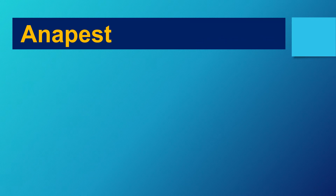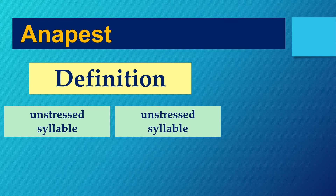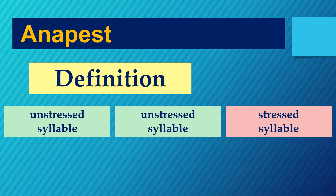Now let's look for some anapests. Anapests are not very common in the English language, so whenever you see one it's a reason to get very excited. Here's what an anapest is: it's an unstressed syllable, another unstressed syllable, and then a stressed syllable — unstressed, unstressed, stressed. Let's find some anapests.